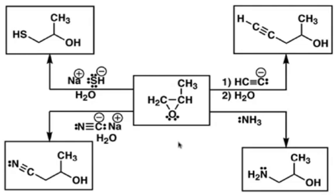A variety of nucleophiles can react with epoxides under basic conditions to give beta-functionalized alcohols. Treatment with sodium thiolate gives a beta-thiol. Treatment with cyanide gives a beta-cyano compound, or beta-nitrile. Treatment with an acetylide anion gives a beta-alkynyl alcohol, or homopropargylic alcohol. And finally, treatment with ammonia gives a beta-amino alcohol. There are a variety of functional and structural motifs that reactions of epoxides open us up to.